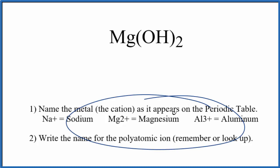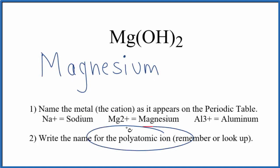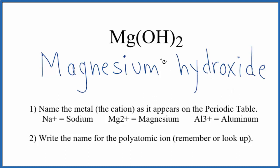We're going to use these rules here to write the name for Mg(OH)₂. First, we write the name of the metal. That's Mg, which is magnesium. Next, we write the name for the polyatomic ion. That's the hydroxide ion. So this is one you really should remember. So the name for Mg(OH)₂ is just magnesium hydroxide.